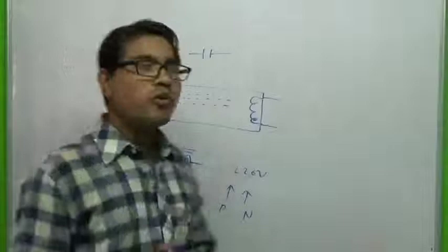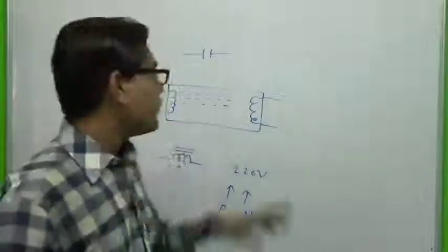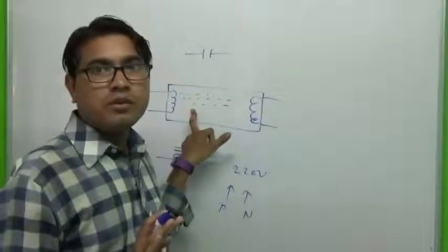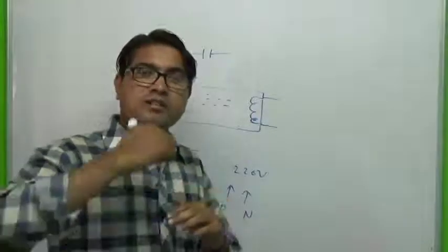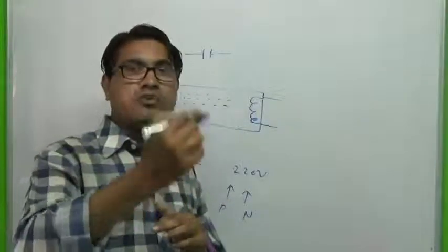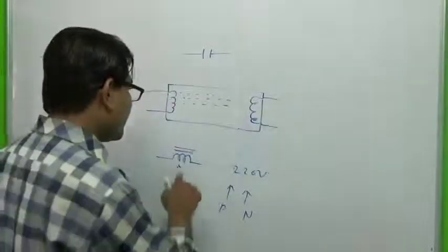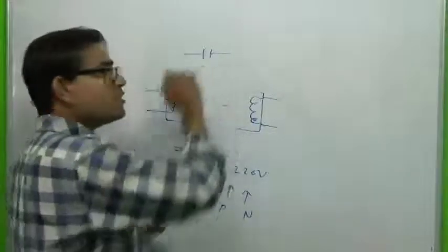220 volts is not good enough to ionize the gas, so we will have to raise the voltage. For raising the voltage, we employ a choke with a starter.